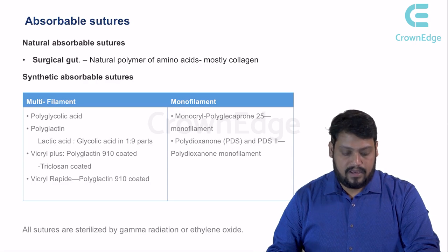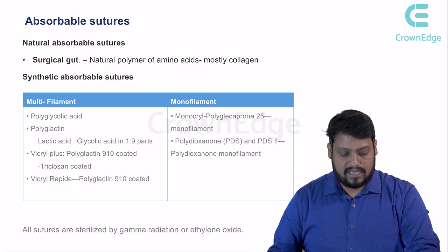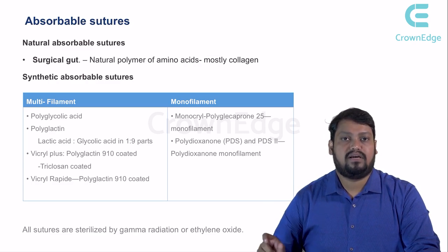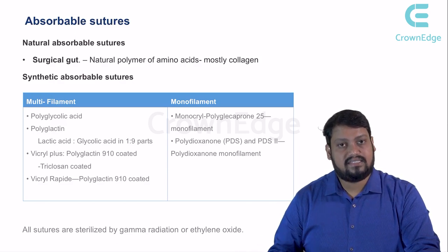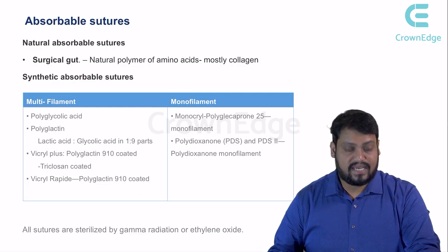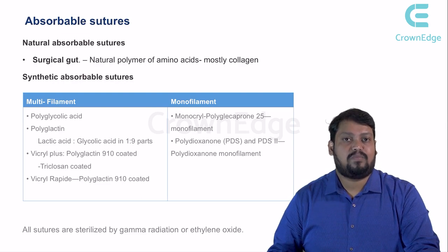Synthetic absorbable sutures can be divided into multifilament and monofilament. Under multifilament, we have polyglycolic acid — a chain of multiple glycolic acid units. Next is polygalactin, which has a lactic acid chain along with glycolic acid in a ratio of one to nine parts. Questions can be expected on these mixing ratios.